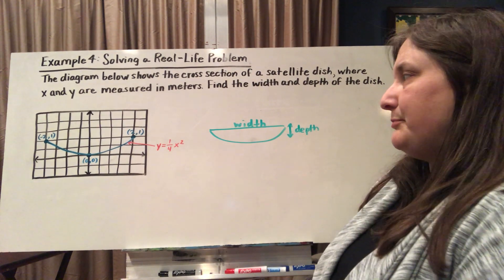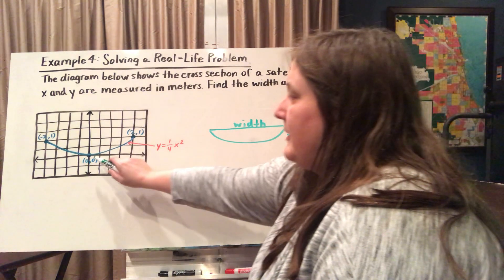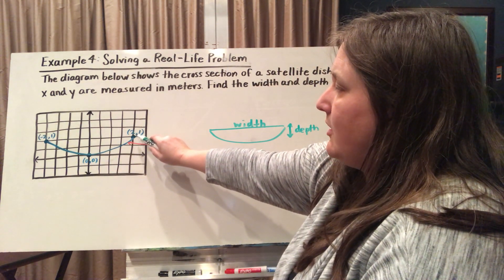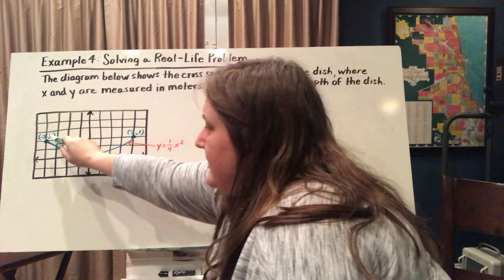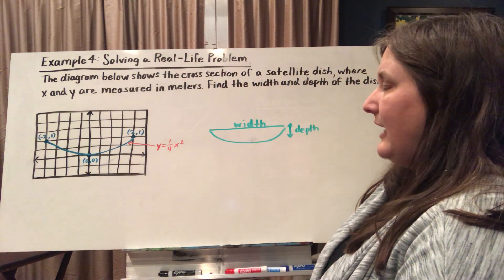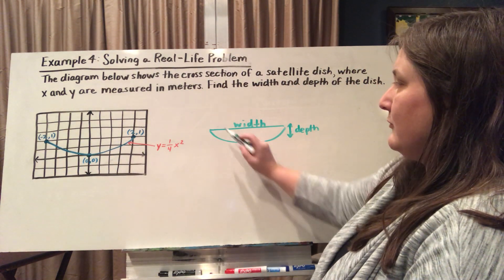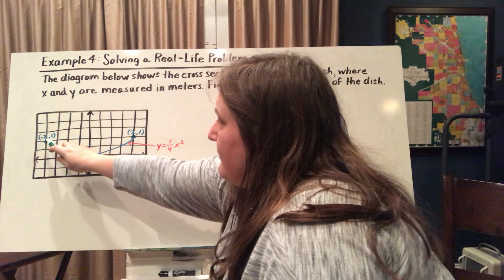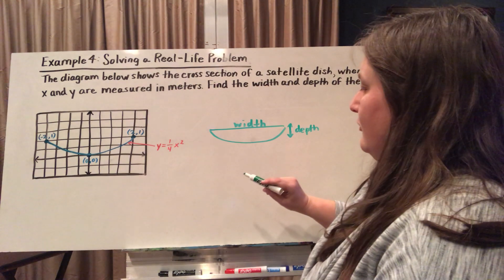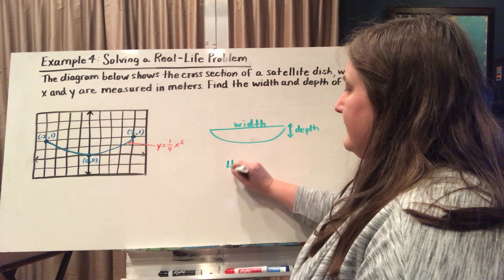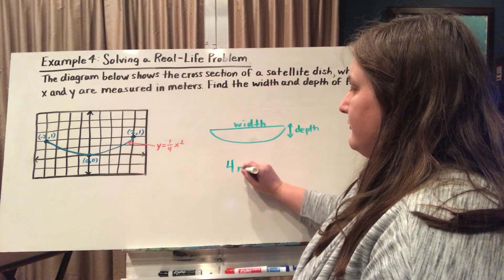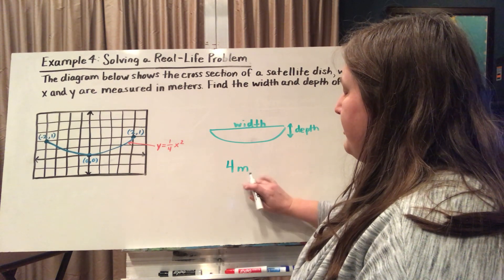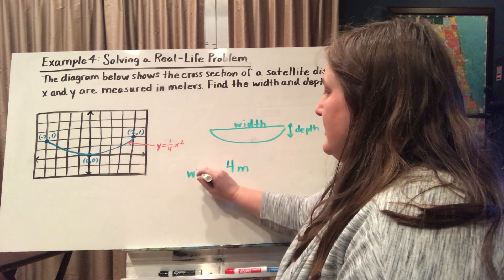So when I'm looking at these points, it goes all the way from 0, 0 at the low point up to 2, 1 here on the right and negative 2, 1 on the left. So if I'm trying to measure the width, the distance between these two, negative 2 and 2, is going to be 4. And since they were measuring in meters, it's going to be 4 meters. So the width of this satellite dish is 4 meters.